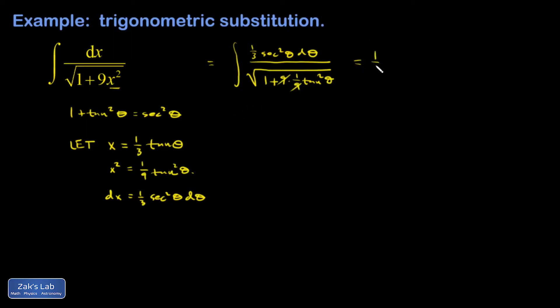I'm going to pull the 1/3 out in front and I get a secant squared theta d theta in the numerator, and I get the square root of 1 plus tangent squared, but that's just secant squared. When I square root that I just get a secant, and I'm going to cancel one of the secants in the numerator.